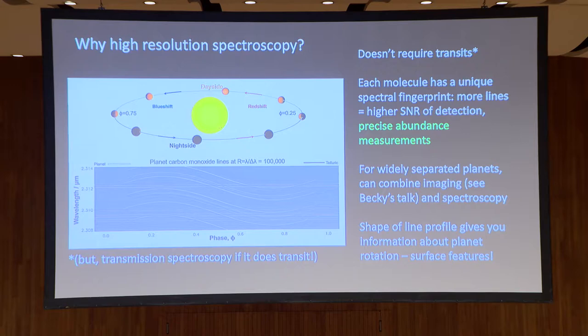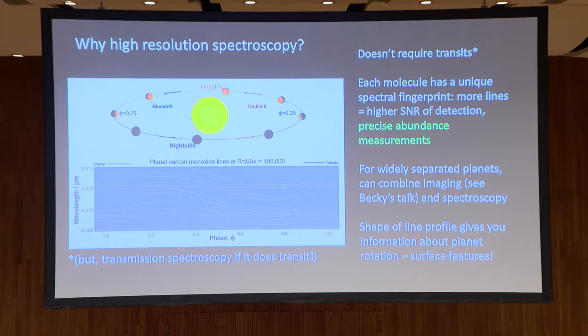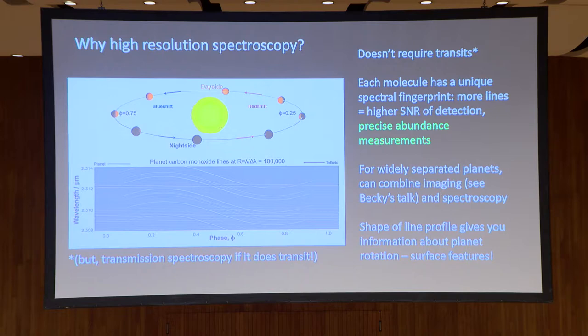The higher resolution you have, the more you can separate lines — some lines we see today are actually combinations of lines. Each molecule and atom has its own spectral fingerprint, and higher resolution gives you better detection of which molecules and atoms are in your atmosphere. You can get better abundance measurements. For widely separated planets, you can put your high resolution spectrograph behind the high contrast imager and do spectroscopy on the planet that way. The shape of the lines in the spectrum also tells you about the surface — you can see winds and surface features with high resolution spectroscopy.